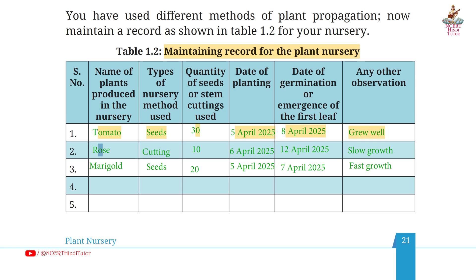Second plant: rose. Method: cutting. Quantity: 10. Date of planting: 6th April 2025. Date of first leaf emergence: 12th April 2025. Observation: slow growth.